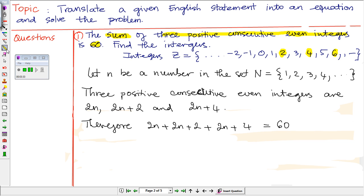Now you are going to combine like terms. These three terms are like terms because they have the same variable, which is n. We add the coefficients: 2 plus 2 plus 2 is 6, so we have 6n plus 6 equals 60.